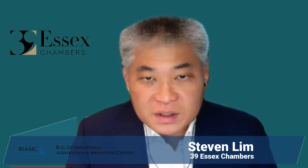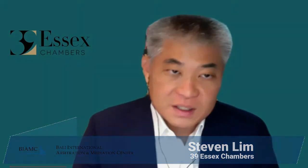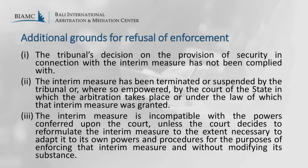But it adds three additional grounds specific to interim measures. These are: the tribunal's decision on the provision of security in connection with the interim measure has not been complied with; the interim measure has been terminated or suspended by the tribunal, or where so empowered, by the court of the state in which the arbitration takes place or under the law of which that interim measure was granted; and the interim measure is incompatible with the powers conferred upon the court, unless the court decides to reformulate the interim measure to the extent necessary to adapt it to its own powers and procedures for the purposes of enforcing that interim measure and without modifying its substance.